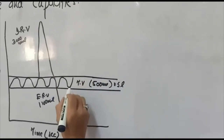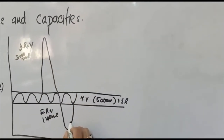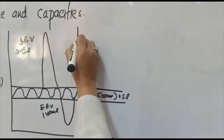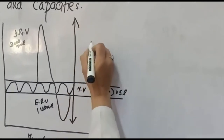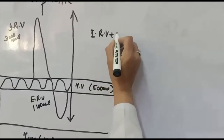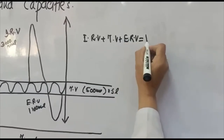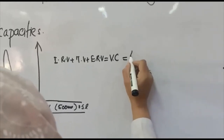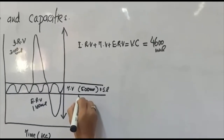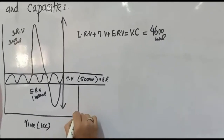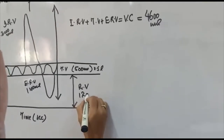These three values — tidal volume, inspiratory reserve volume, and expiratory reserve volume — together equal the vital capacity. So vital capacity equals inspiratory reserve volume plus tidal volume plus expiratory reserve volume, and it is normally about 4600 milliliters. The air remaining in the lungs after maximum expiration is known as residual volume, and it is usually about 1200 milliliters.